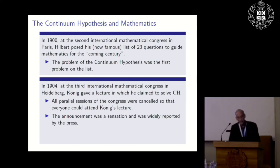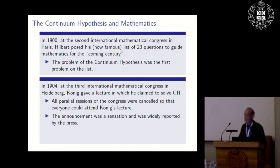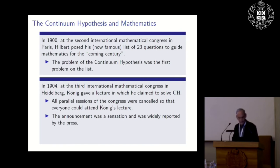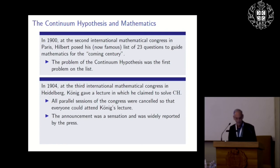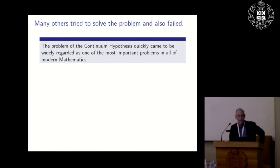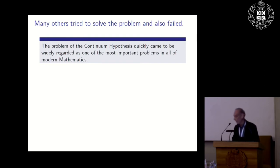In 1904, at the Third Congress in Heidelberg, König gave a lecture claiming to solve CH. All parallel sessions were canceled so everyone could attend — the announcement was a sensation widely reported by the press. The Grand Duke Friedrich I of Prussia had Felix Klein explain the entire matter to him personally. The proof was wrong. Many others tried to solve the continuum hypothesis and failed. Hilbert thought he had a proof for two years. The problem quickly came to be regarded as one of the most important in all of modern mathematics.